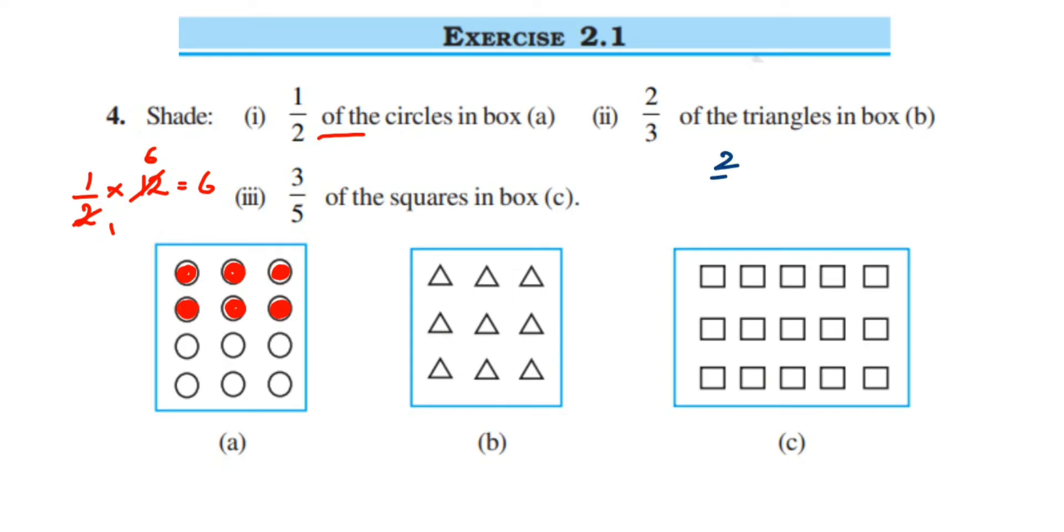So two-thirds means 2 by 3, 'of' means multiplication, and 9 triangles we have. So you can see 3 and 9 will get cancelled. So 3 ones and 3 threes are 9. So 2 into 3 will be equal to 6. So again, 6 triangles we have to shade here.